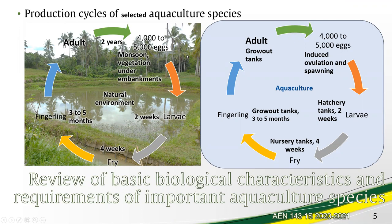For the production cycle, we begin with the adult, which is already viable for spawning at age two years. In the natural environment, it can spawn during the monsoon season. In vegetation and embankments, it can spawn 4,000 to 5,000 eggs. In two weeks these become larvae, and after another four weeks these become fry. The fingerlings are then available by three to five months, depending on conditions and environment, and the cycle goes on.